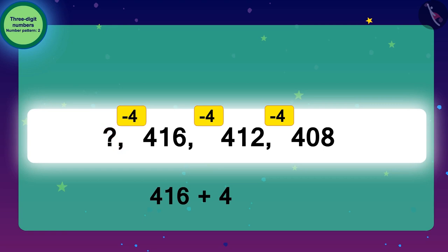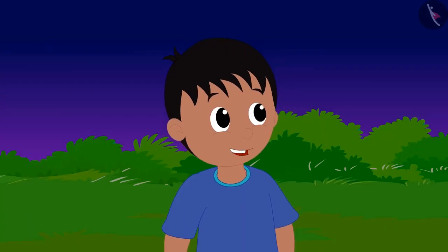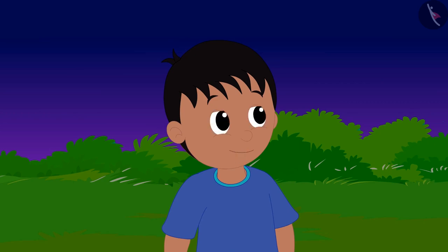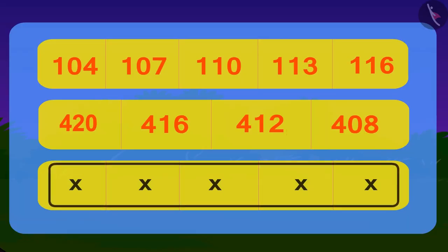So, the answer to our code is add 4 to 416, that is 420. Raju told the answer of the code to the alien, and the alien showed his third and last code.